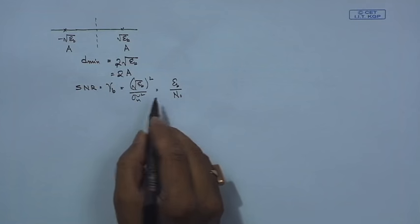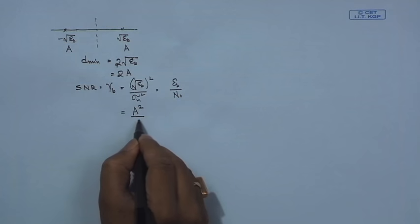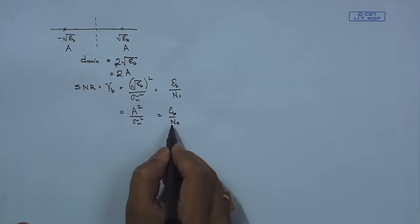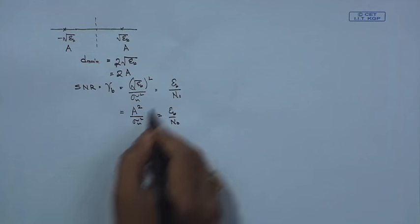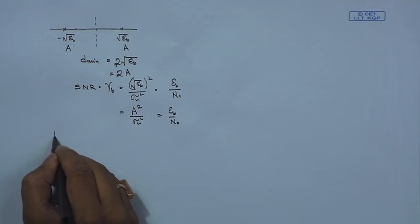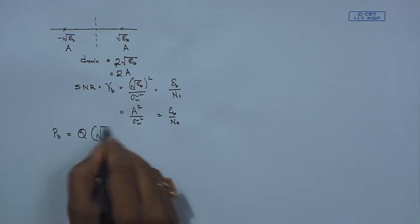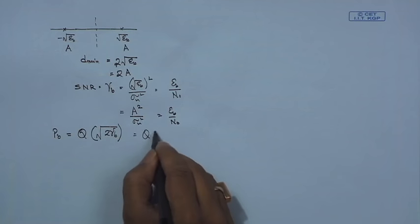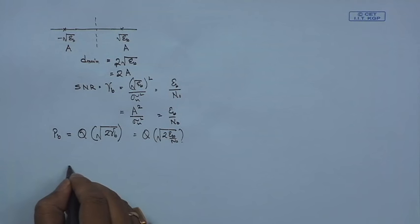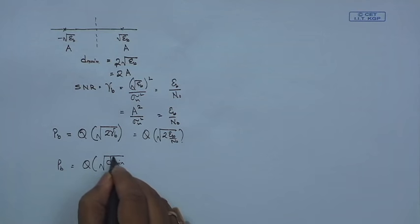This is equal to a² / sigma²_n, which equals E_b / N₀. So E_b / N₀ equals a² / sigma²_n, or equivalently a² = E_b. The general error probability expression for AWGN is the Q-function of √(2·gamma_b), which is Q(√(2·E_b/N₀)). In some cases, the error probability is also written as Q(√(d²_min / 2N₀)).